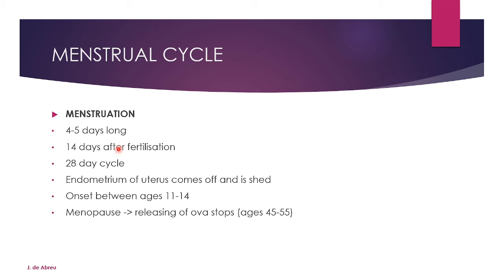Menstruation is between 4 to 5 days long, sometimes up to 7 or 8 days. It happens 14 days after ovulation — not fertilization. It is a 28-day cycle. The endometrium is shed, and menstruation usually begins between the ages of 11 and 14. It stops at menopause, between the ages of 45 and 55, when the body stops releasing ova.